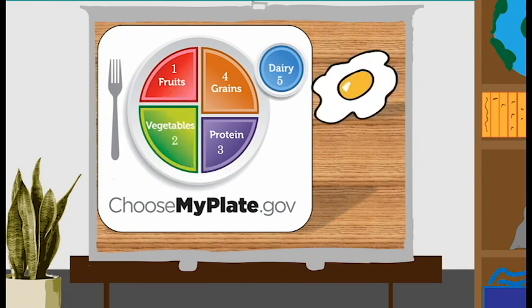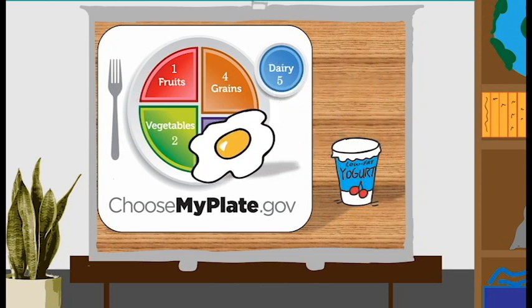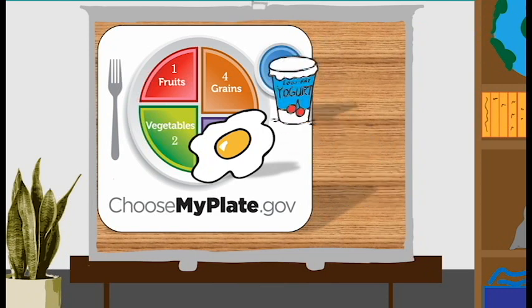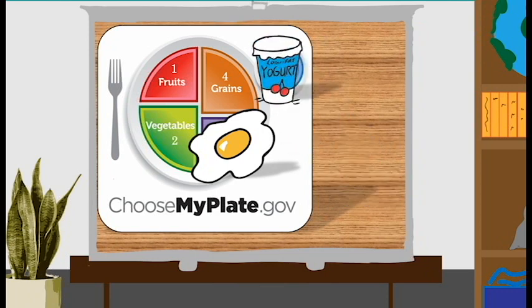Here we have an egg and some low-fat yogurt. These are foods that I love to include when my breakfast. In which my plate section would the egg be found? And what about the yogurt? The egg is a protein. And yogurt is a dairy. Very good. Calci M Bone will be cheering you on for choosing calcium-rich dairy options.